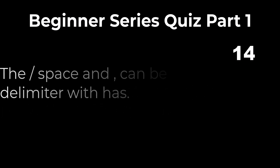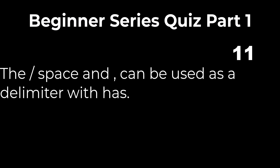Problem 6: The slash, space, and comma can all be used as a delimiter for use with has. Contains looks for strings and substrings within fields of a data set. The double equal represents an exact string match within a field. Has looks for full strings or strings that have a delimiter to separate characters. Spaces, slashes, and commas are all valid delimiters that can be used by default with has. The answer is true.